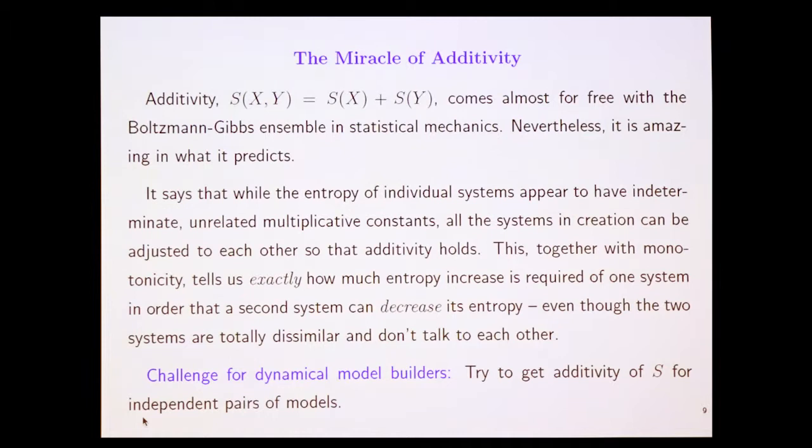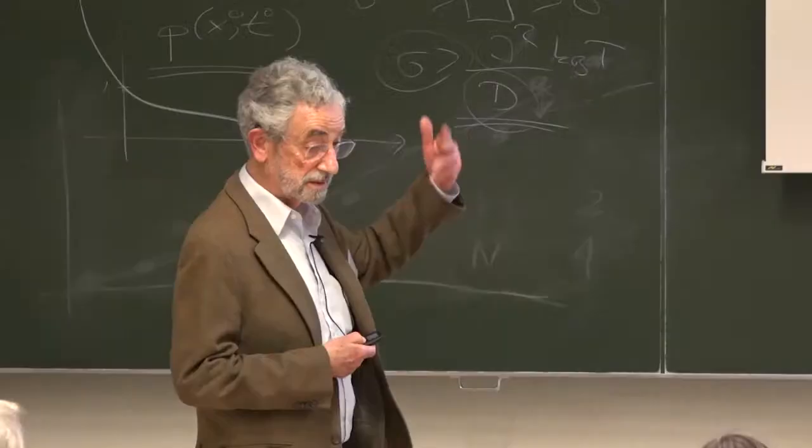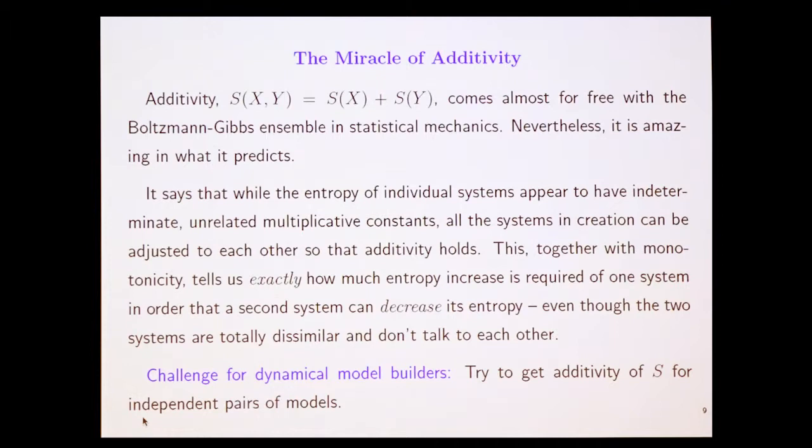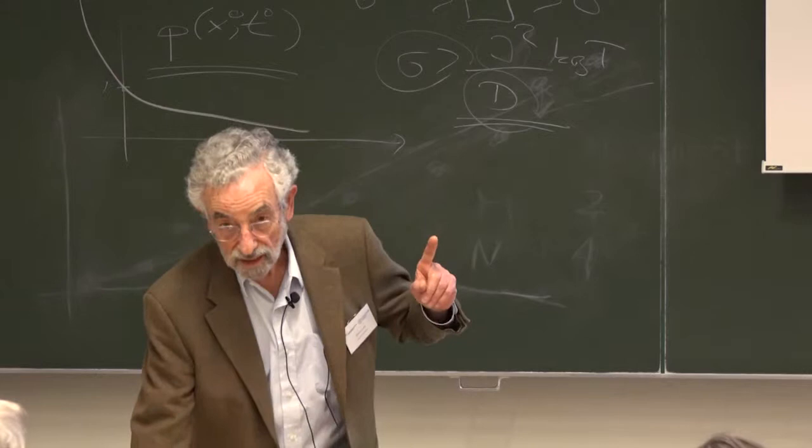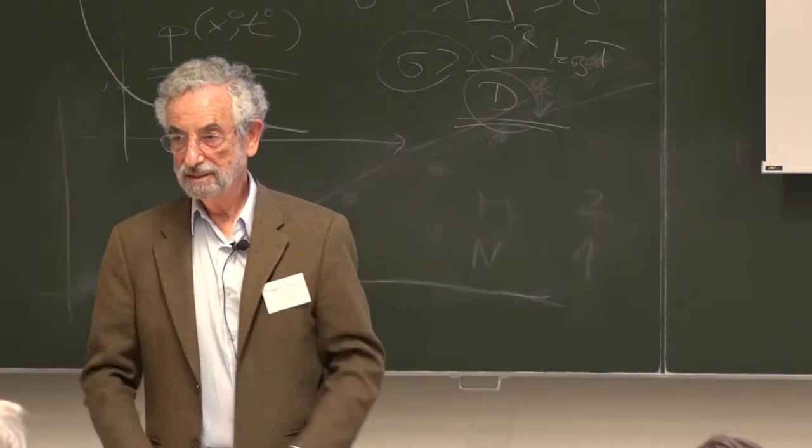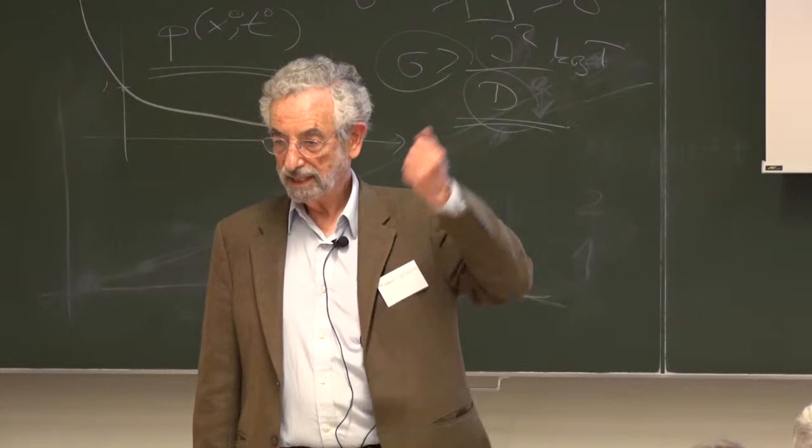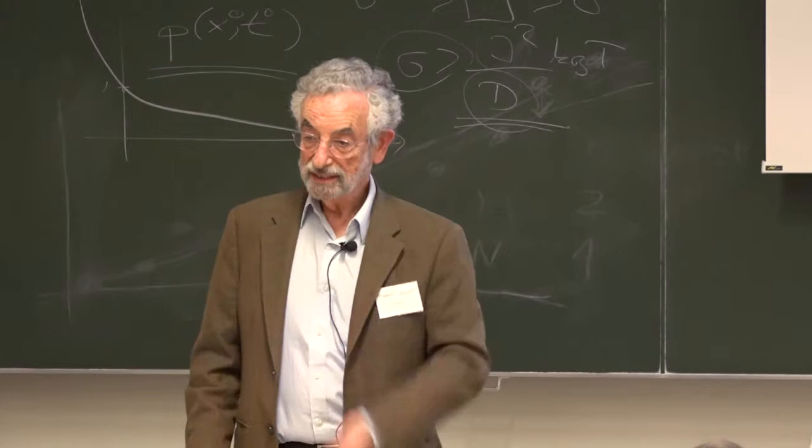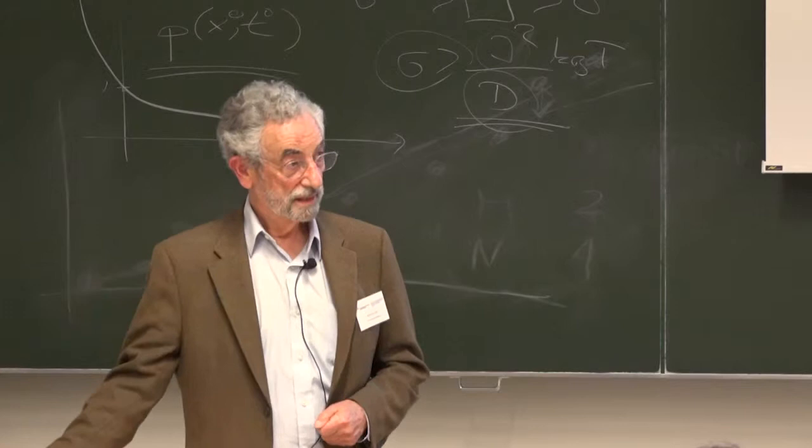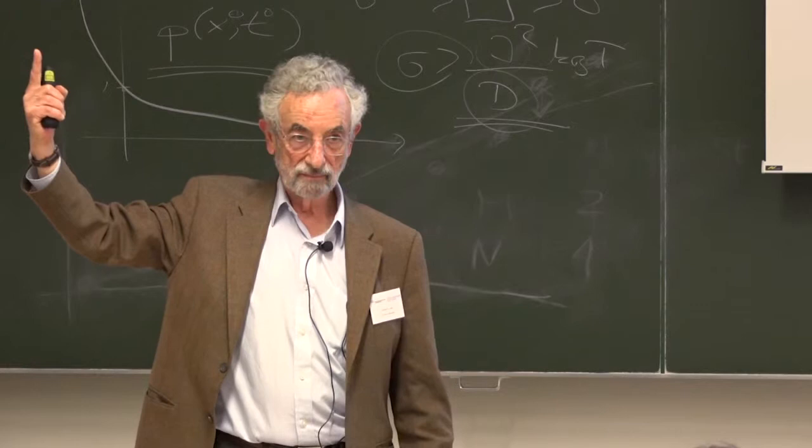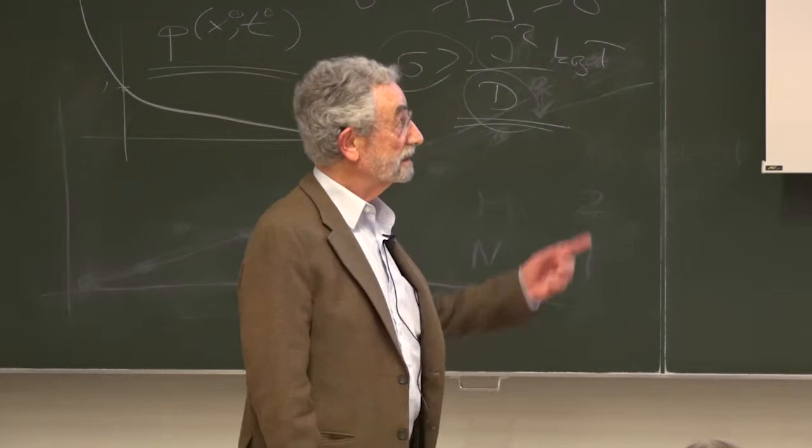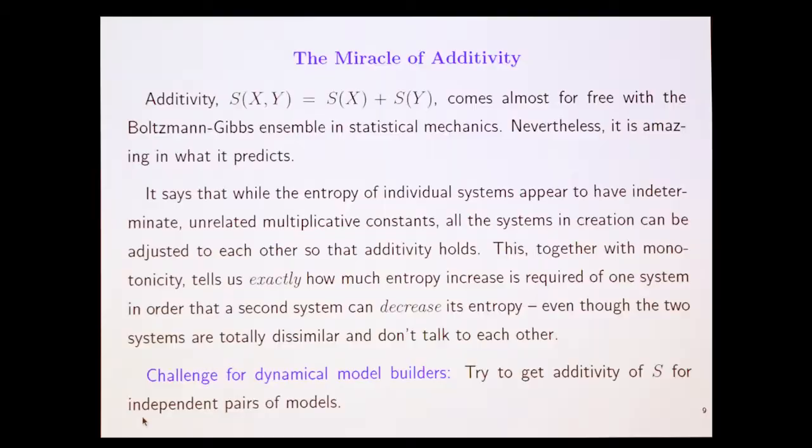So it says that while the entropy of individual systems appear to have indeterminate, unrelated multiplicative constants, all the systems in creation can be adjusted to each other so that additivity holds. Now remember, entropy of a system is determined up to a multiplicative constant. We learned that in quantum 101 or something. But I can adjust the constants of all the systems in the world, this arbitrary multiplicative constant for each system, in such a way that it's additive. So you think about that. This is very surprising. And general systems have nothing to do with each other.